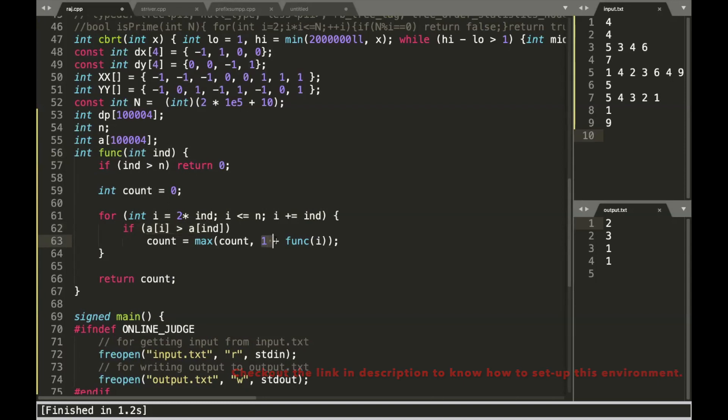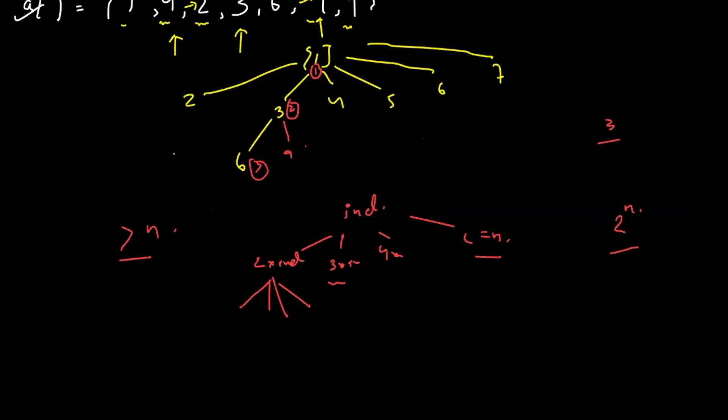If it is, what we can do is, we can add one to the answer and call the function again. Because the depth of recursion increases. So whatever it returns, I compare it with all the multiples. And whichever is the maximum, that is my answer. So why does this work?